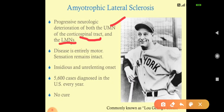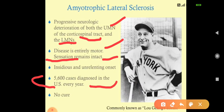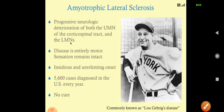The disease is entirely motor — sensations remain intact. It has an insidious and unrelenting onset. About 5,600 cases are diagnosed in the USA per year. There is no cure for amyotrophic lateral sclerosis.